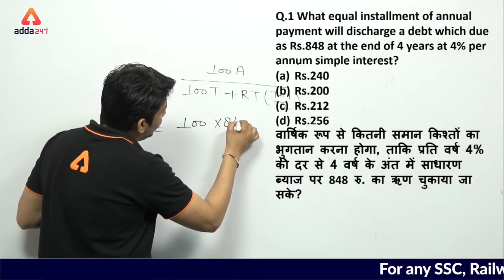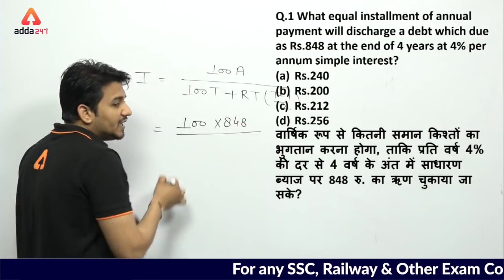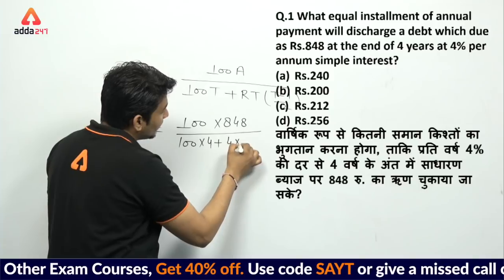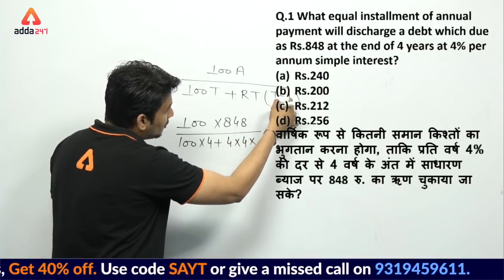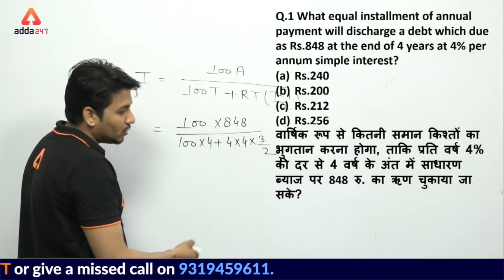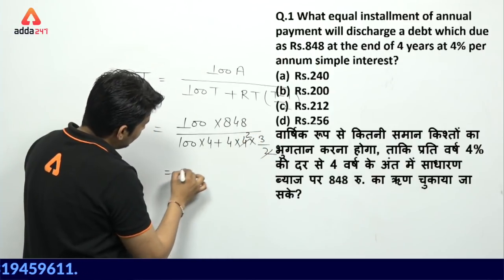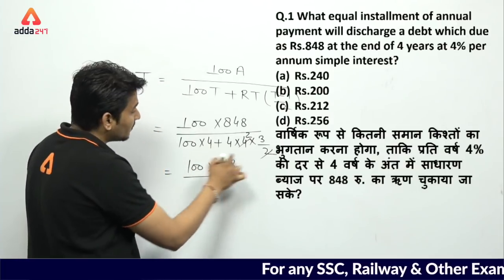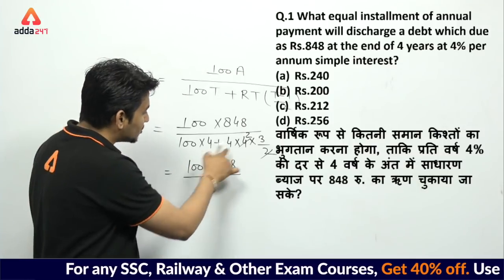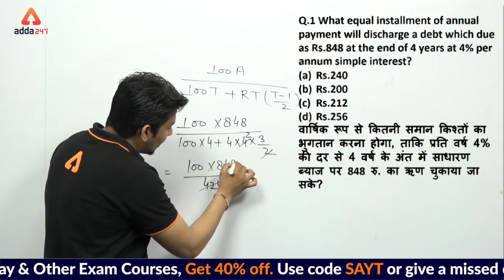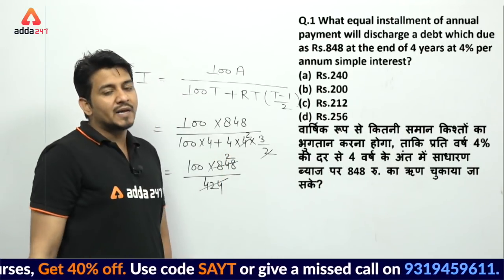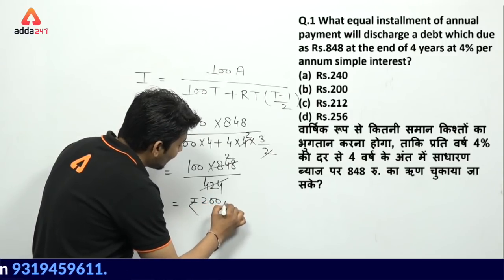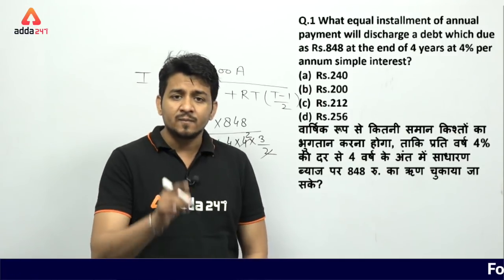100 into 848 upon time. Time given is 4 years, rate is also 4%. So 100 into 848 upon 400 plus 24, which gives 424. Now 848 divided by 424 cancels twice, and 100 multiplied by 2 gives 200. So the yearly installment you need to pay is 200 rupees.